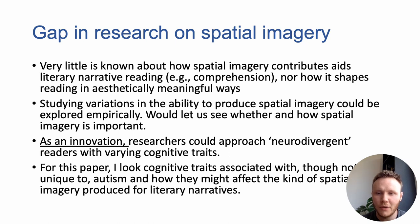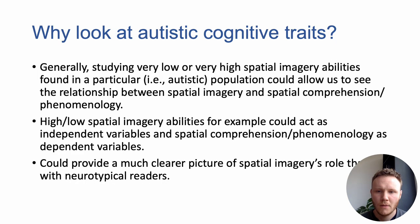And secondly, whether variations in these traits impact literary reading. To explore this topic, I suggest that researchers could in the future approach readers of literary narrative with neurodivergent cognitive traits. As a specific example, I draw attention to the cognitive traits associated with, but not unique to, autism that may influence what kind of spatial imagery is produced for literary narrative texts.